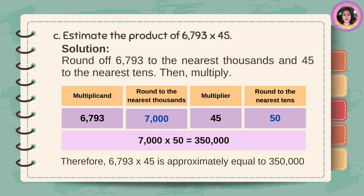Estimate the product of 6,793 times 45. Round 6,793 to the nearest thousands and 45 to the nearest tens, then multiply. The multiplicand is 6,793; rounded to the nearest thousands is 7,000. The multiplier is 45; rounded to the nearest tens is 50. 7,000 times 50 is equal to 350,000. Therefore, 6,793 times 45 is approximately equal to 350,000.